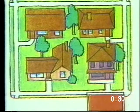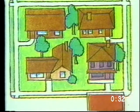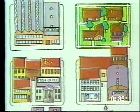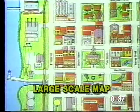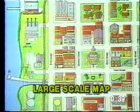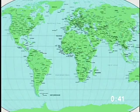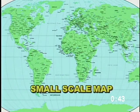If the map shows only your neighborhood or the town you live in, the map will be able to show more information. This is called a large-scale map. Maps that show continents or hemispheres, or even the whole planet, are called small-scale maps.